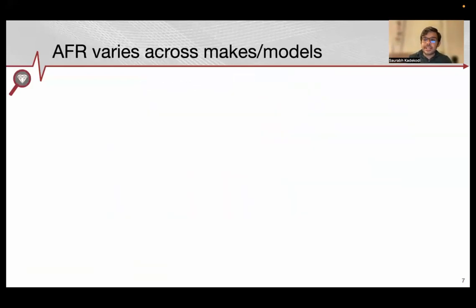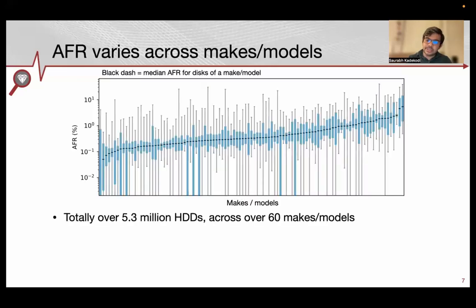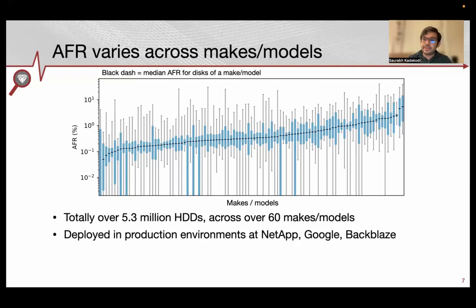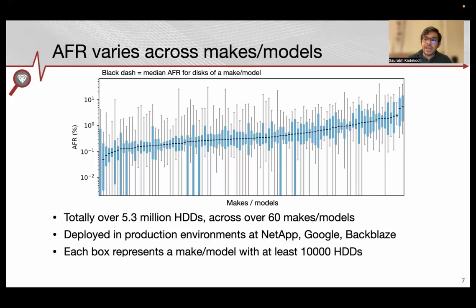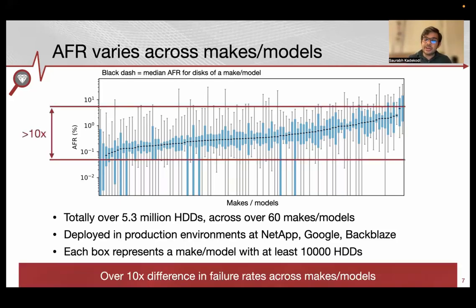In this work, we looked at over 5.3 million disks across 60 makes and models in three large deployment scenarios: NetApp, Google, and Backblaze. Each box in the plot represents a make/model with at least 10,000 disks, with AFR plotted on a log scale on the y-axis. There is over 10x difference between the weakest and strongest disk, even within the same cluster. Not only does AFR vary across makes and models, but it also varies across a device's age.